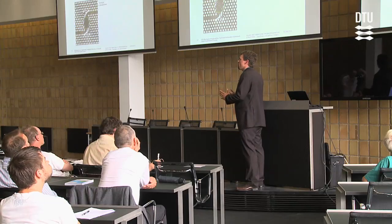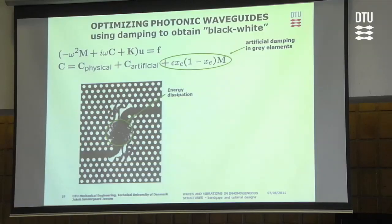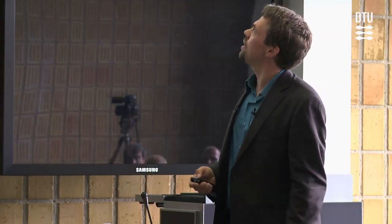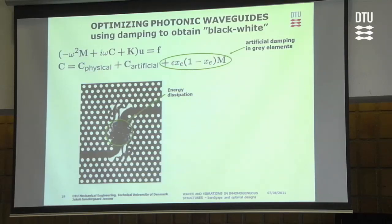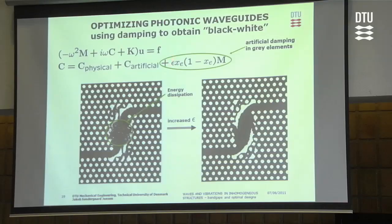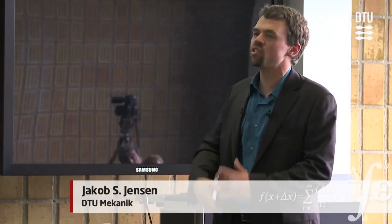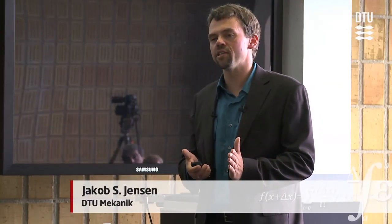A key useful point for creating these optimized designs was the idea of using damping to obtain a so-called black-white design. Some gray elements appear in the optimization, and the procedure doesn't inherently prevent elements from being gray — meaning material cannot be interpreted as either glass or air. The solution was to add damping active only in gray material: maximizing power flow makes gray material uneconomical, so it gets removed by cranking up the epsilon parameter. This created crisp black-white designs more smoothly than explicit penalization.